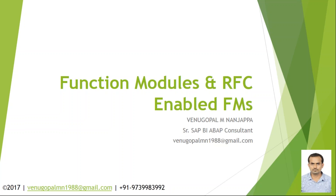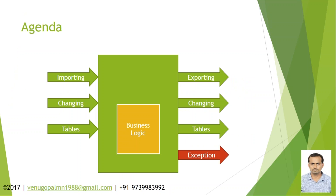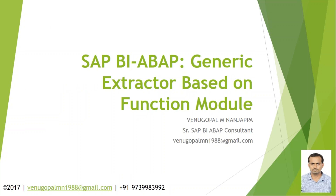Then we will increase the complexity — pulling data from a database table and giving it as function module output. We can create a function module that accepts a date as input and gives fiscal year, calendar day, calendar month, and the last day of the current month as output. Once we are done with that and are thorough with our basics, we will move on to generic extractor based on function modules, where we will see lots of scenarios: how to pull data from a single table, multiple tables, how to read values passed by the user, and how to use a cursor concept to pull data packet by packet.